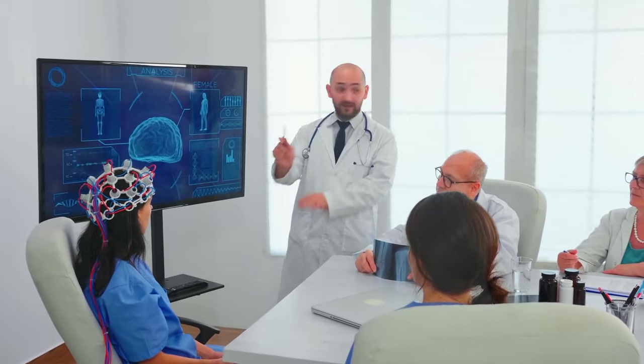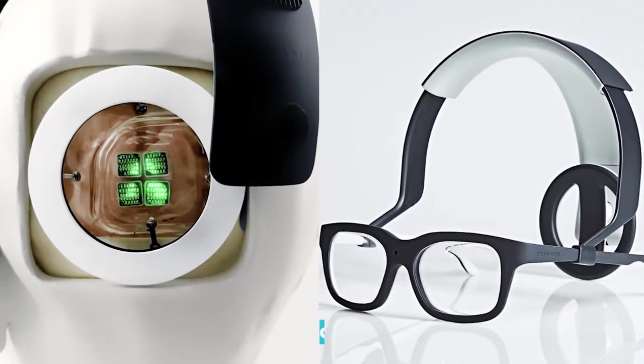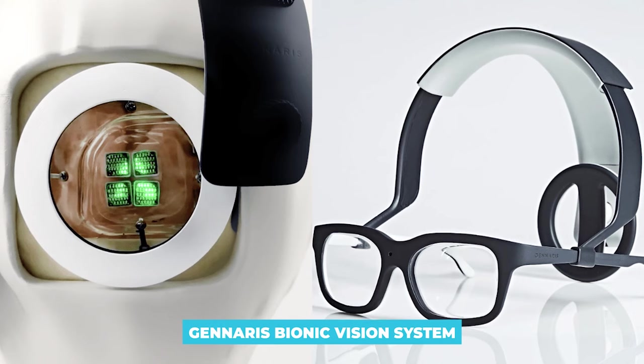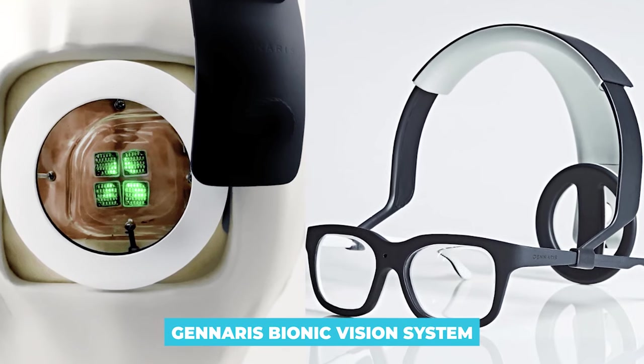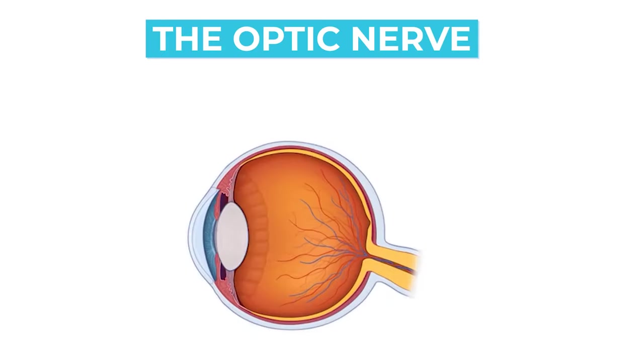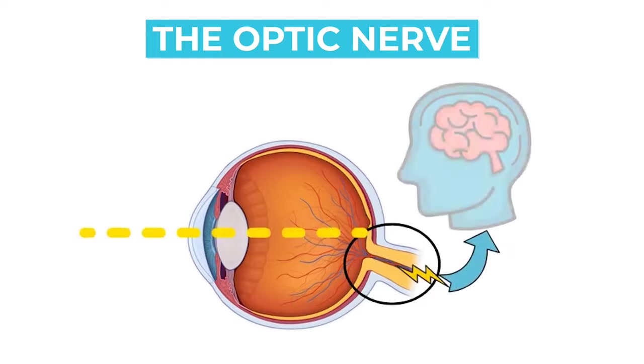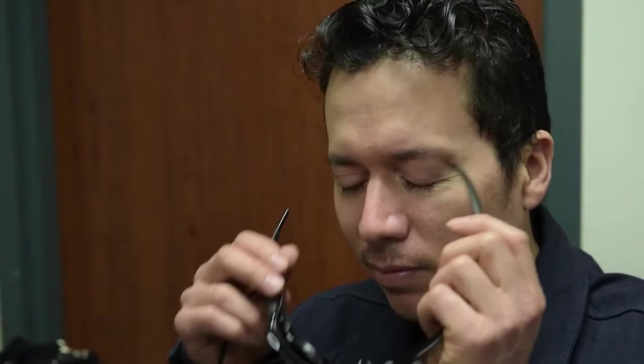The Glenaris bionic vision system, or simply the bionic eye, is for blind people who have damaged optic nerves which prevent the transmission of visual data from the retina of the eye to the visual cortex of the brain.